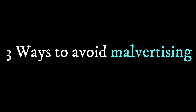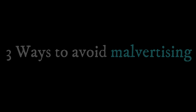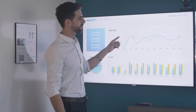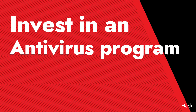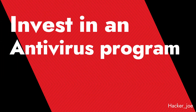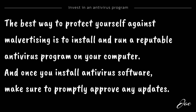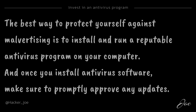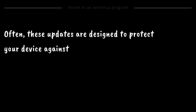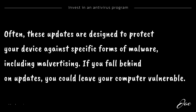Three ways to avoid malvertising. Avoiding malvertising takes vigilance, but it's possible to defend against it. The first is to invest in an antivirus program. The best way to protect yourself against malvertising is to install and run a reputable antivirus program on your computer. Once you install antivirus software, make sure to promptly approve any updates. Often these updates are designed to protect your device against specific forms of malware, including malvertising. If you fall behind on updates, you could leave your computer vulnerable.